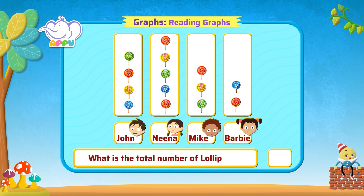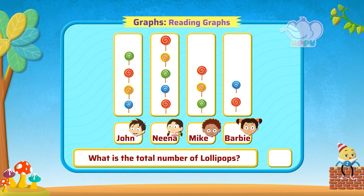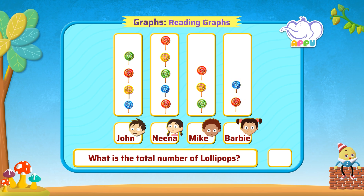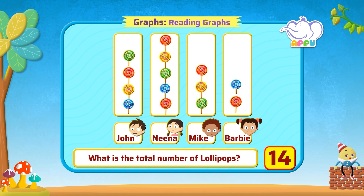What is the total number of lollipops? Let's count the lollipops: one, two, three, four, five, six, seven, eight, nine, ten, eleven, twelve, thirteen, and fourteen. We have fourteen lollipops.